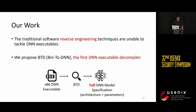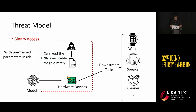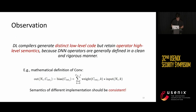Given the DNN executable file, in this work we propose BTD, the first DNN executable decompiler. We aim to analyze and extract the high-level DNN model specifications — including DNN architectures and pre-trained parameters — from X86 DNN executables. We assume we have physical access to the target device. For example, if the DNN executable is deployed in a smart device like a watch, a speaker, or a cleaner, we can be aggressive enough to not only access the device but also extract the DNN executable image from the hardware.